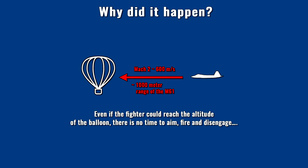Relative speed compared to the target is also a serious factor. The balloon is an almost static target, while a fighter jet flying at twice the speed of sound has a relative speed of nearly 600 meters per second. The effective range of the 20mm M-61 Vulcan rotary cannon is around 1 km due to its dispersion and ballistics. At 600 m/s relative speed, there is extremely short time to aim, fire, and disengage to avoid collision — this is simply not safe.